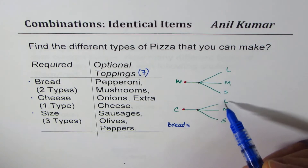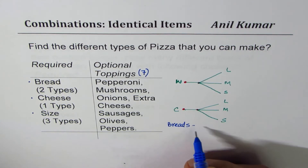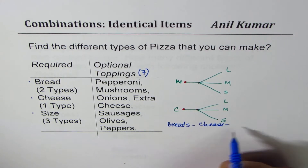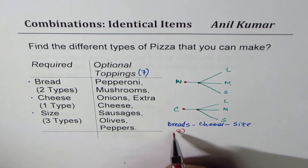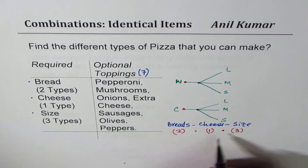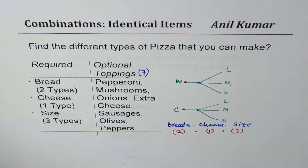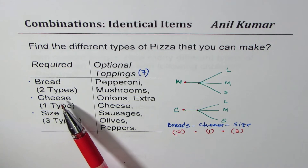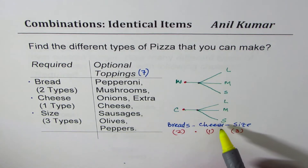As you can see, there are two types of breads, one type of cheese, and three types of sizes, giving us one, two, three, four, five, six combinations. So the number of combinations is two times one times three, which is six. Without drawing a tree diagram, you can do it by simply multiplying, because these are independent items taken one after the other.